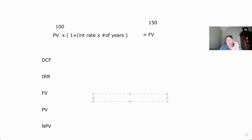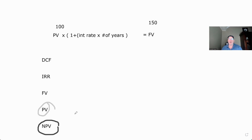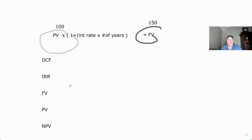I'm explaining it the way you need to know it for the test. So these are the terms we're going to be going over: discounted cash flow, internal rate of return, future value, present value, and NPV. Now, present value — to get present value, we need the future value. So let's talk about future value first.